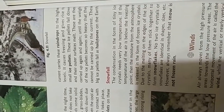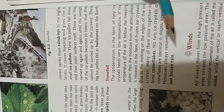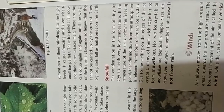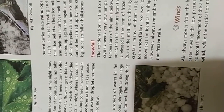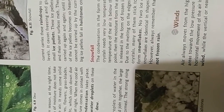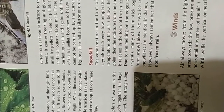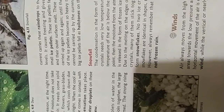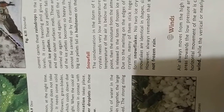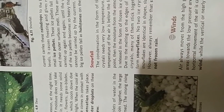So I hope these three forms of precipitation — dew, hailstone, and snowfall — you have understood. After that, you have to read from your book, my dear kids. Take care. Bye-bye.